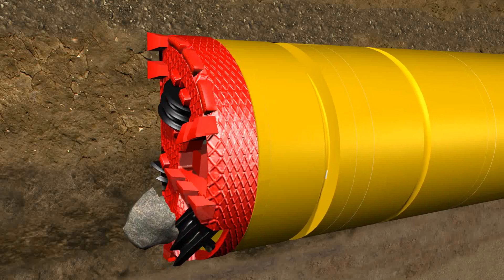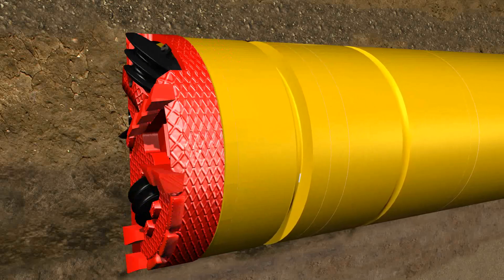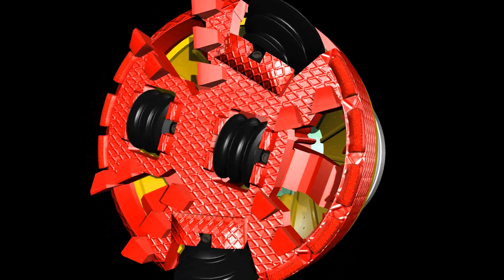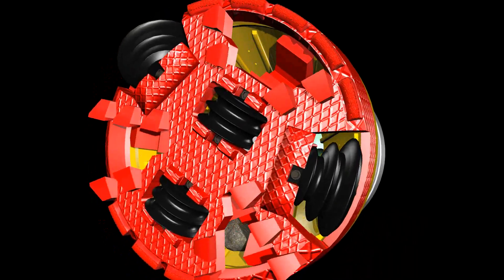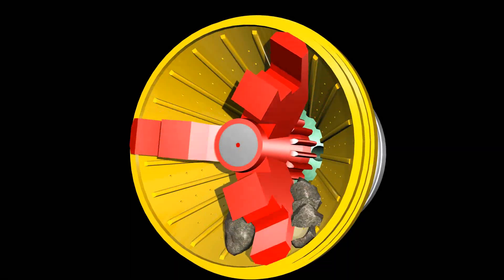Stones falling through the openings of the cutting wheel into the crusher chamber are crushed by the reinforced conical crusher and the spokes of the cutting wheel and afterwards transported together with the slurry water to the surface.